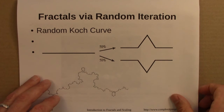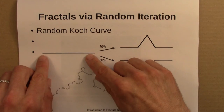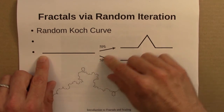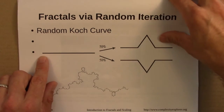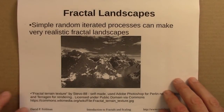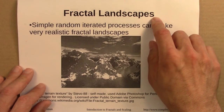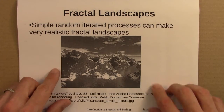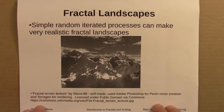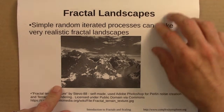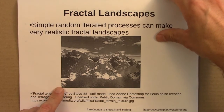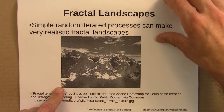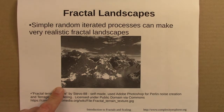If you generalize those ideas so that you're working not with lines but with surfaces, and add a little bit of randomness and then some color, you can produce these fractal landscapes. Very simple iterated processes, with some randomness and then some color and shading, can produce some alarmingly realistic fractal images. These are sometimes known as fractal forgeries.